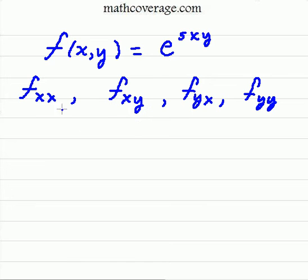In this problem, we've got our work cut out for us. They're asking us to find the second partial with respect to x, the second partial with respect to x and y, the second partial with respect to y and x, and finally the second partial with respect to y, y. Here's our function: f of x, y is equal to e to the 5xy.